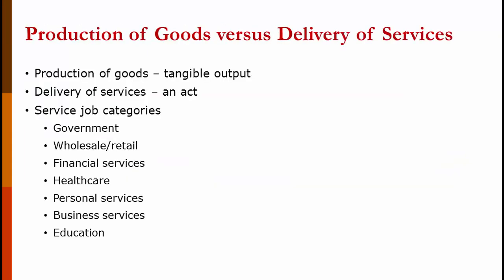We produce goods and we deliver services. When we produce goods, we have a tangible output — something we can hold in our hand. Delivery of a service is an act, like a barber cutting your hair or a dentist cleaning your teeth. Services can be categorized into broad categories: government, wholesale/retail, financial services, health care, personal care, business services, and education.